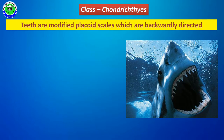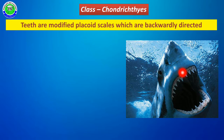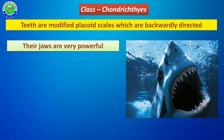Another important character: Chondrichthyes members have very sharp teeth. The teeth are considered a modification of placoid scales — during evolution, the placoid scales were modified into sharp teeth. These teeth are generally present in the jawbone, and the presence of a jawbone is a characteristic feature of these members. The teeth direction is towards backward.